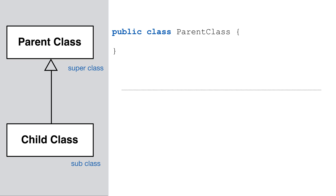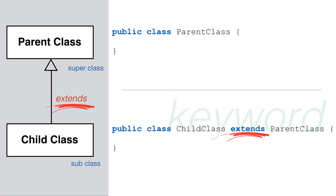When a Java class inherits from another class, we say it extends the super class. We use the keyword 'extends' between the child class we're creating and the parent class we're extending, or inheriting. We use an arrow to show the direction of inheritance in our diagram.